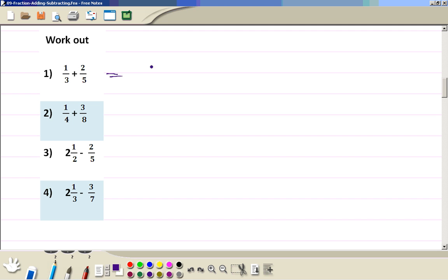Now to complete these. 5 times 1, 3 times 2, 3 times 5. 1 quarter can be written as 2 out of 8 plus 3 over 8. Now we've got the same denominator, 2 plus 3 is 5.